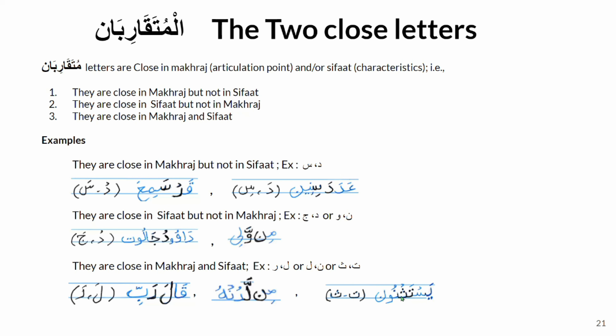The third way to identify mutaqariban letters is when the letters are close in both makhraj and sifat. In the example 'yastathnoon,' letter ta and letter tha both use the top of the tip of the tongue, so they are close in makhraj. They also share all sifat except that ta is a shiddah letter while tha is a rakhawa letter. In the example 'milladunhu,' letter noon comes from the tip of the tongue and letter lam from the edges of the tongue, with only letter ra between them going toward the tip.